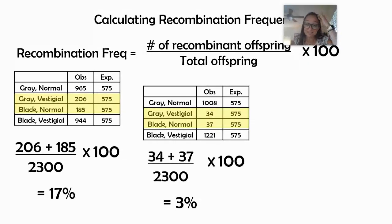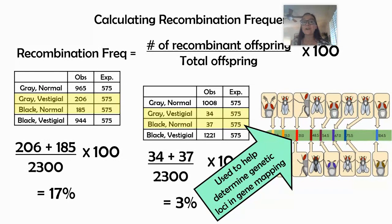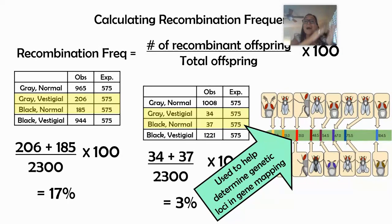In the second data set, 34 plus 37 divided by 2,300 times 100 gives only 3%, telling us those genes are located very close together on the same chromosome. T.H. Morgan, the fruit fly scientist, used this information in a process called gene mapping. A high percentage tells us genes are located far apart on the chromosome and crossing over happens frequently between them, while small numbers tell us they're closer together. You can use recombination frequencies to find the genetic loci of different traits on the same chromosome.